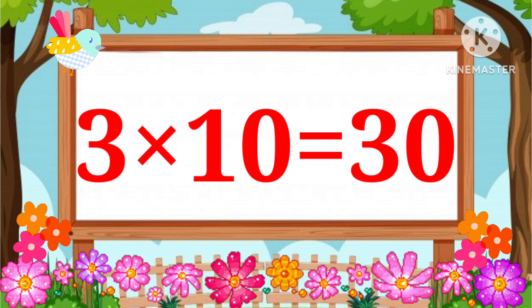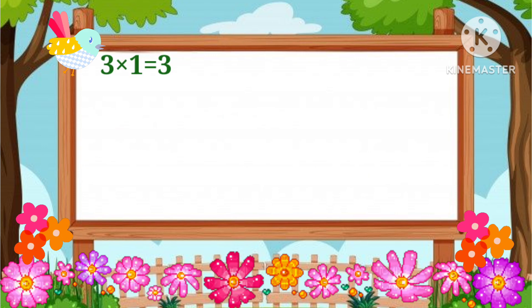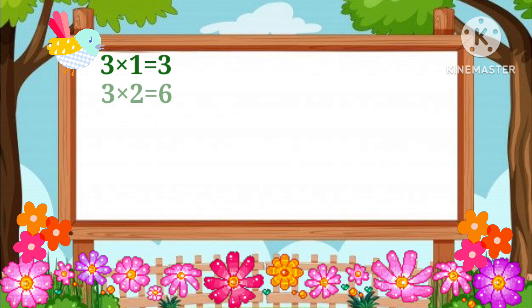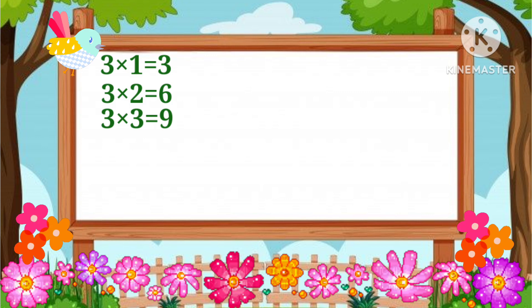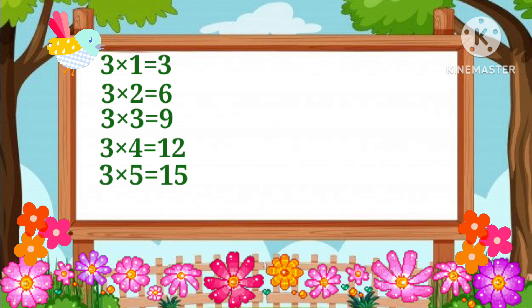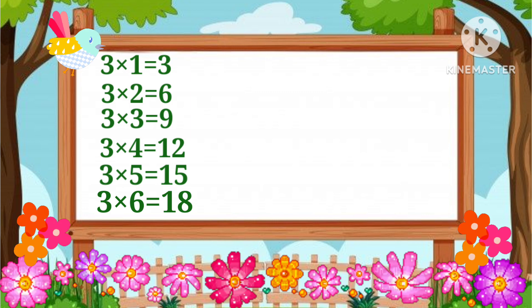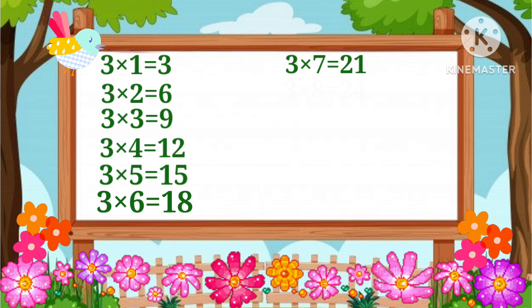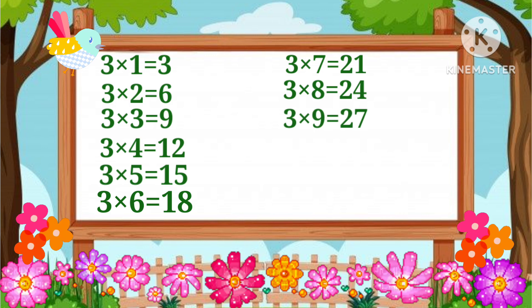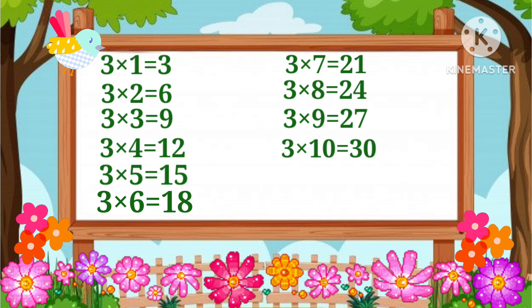3 one's a 3, 3 two's a 6, 3 three's a 9, 3 four's a 12, 3 five's a 15, 3 six's a 18, 3 seven's a 21, 3 eight's a 24, 3 nine's a 27, 3 ten's a 30.